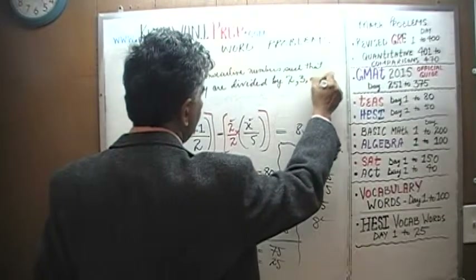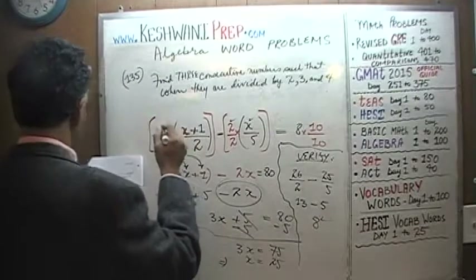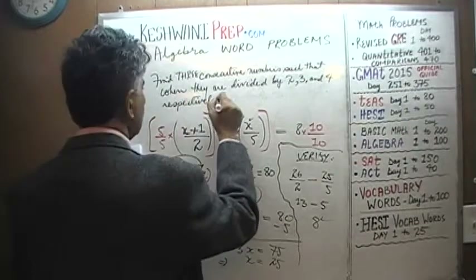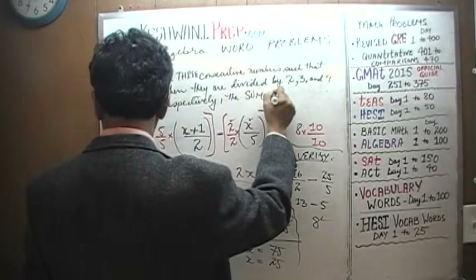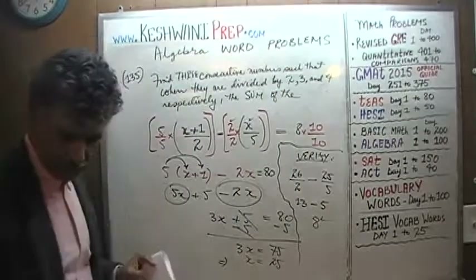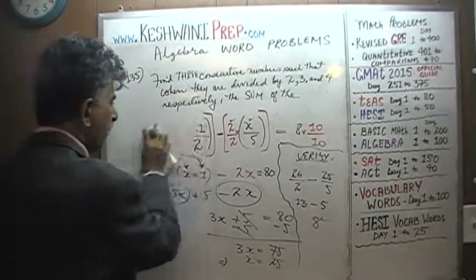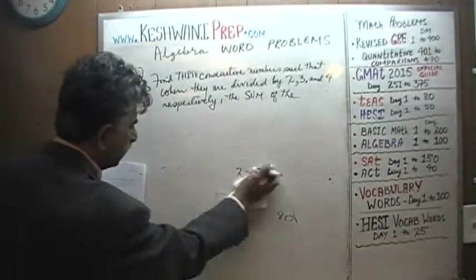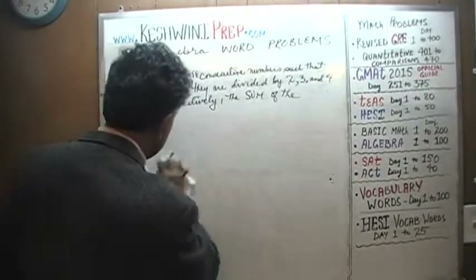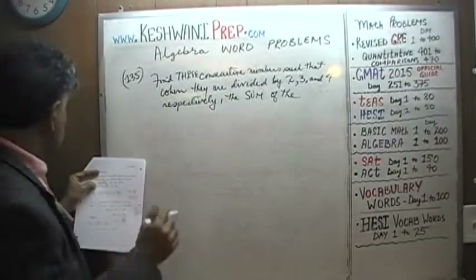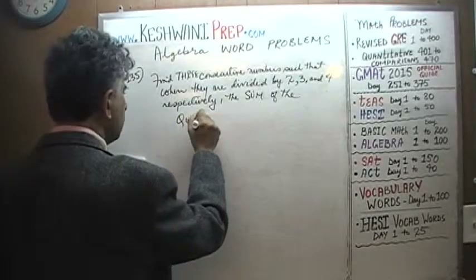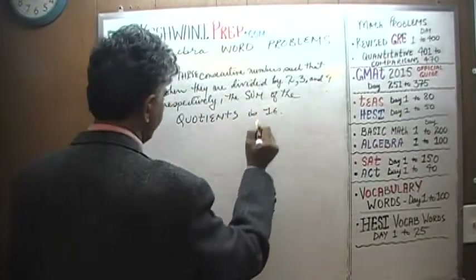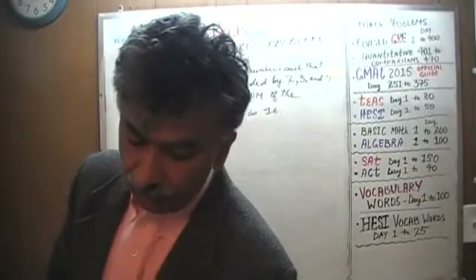Find three consecutive numbers such that when they are divided by two, three, and four respectively, the sum of the three quotients is sixteen.